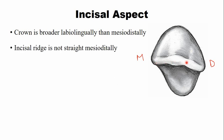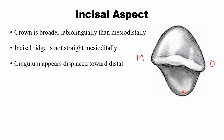The incisal ridge of the mandibular lateral incisor follows the curvature of the dental arch, which is U-shaped, so there is a slight curvature from mesial towards the distal side. Unlike the mandibular central incisor, the incisal ridge of the lateral incisor is not straight. The cingulum appears slightly displaced more towards the distal side. The tooth is not bilaterally symmetrical — the mesial and distal sides do not appear the same because the crown is tilted more towards the distal side.